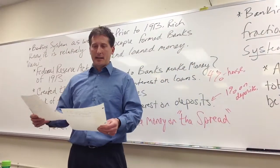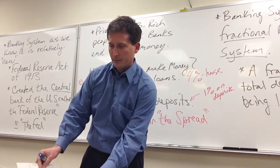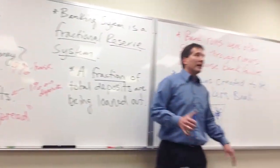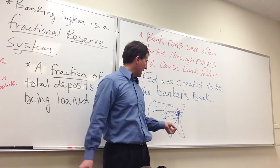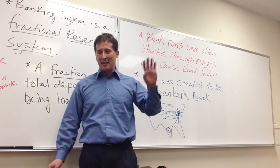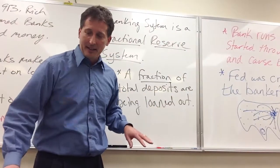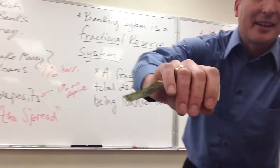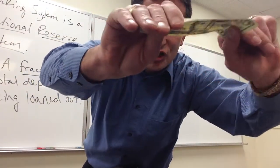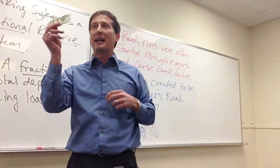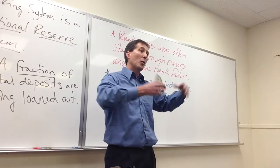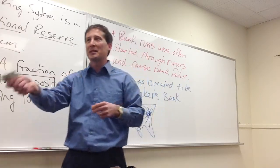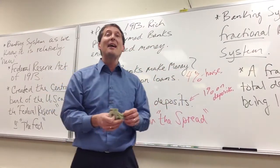If every bank in the world had a run simultaneously, the system could still fail in theory. But there's one thing the Federal Reserve can fall back on: they have the power to print money. They control the money supply — they can always just run the old printing press. So in theory, the government never runs out of money.